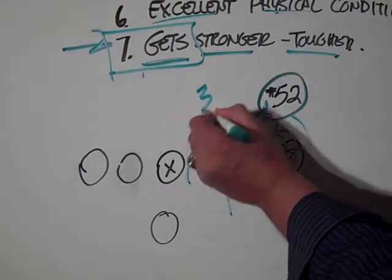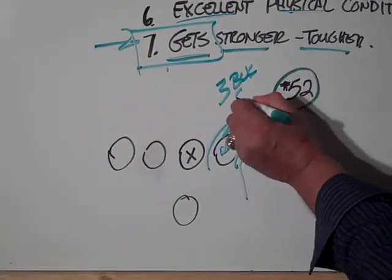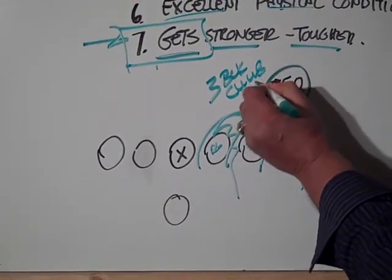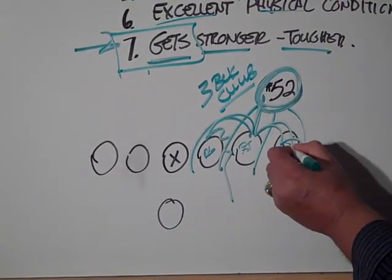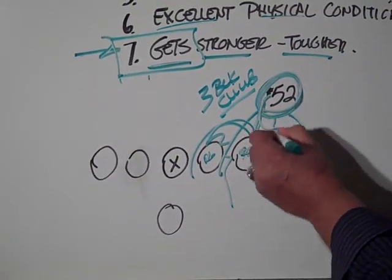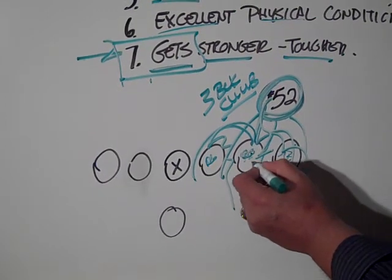Okay, when you're in the three-block club, everyone has to keep their eye out for you. Because you may have blocked your guy, but you see 52 showing up, you've got to block him again.